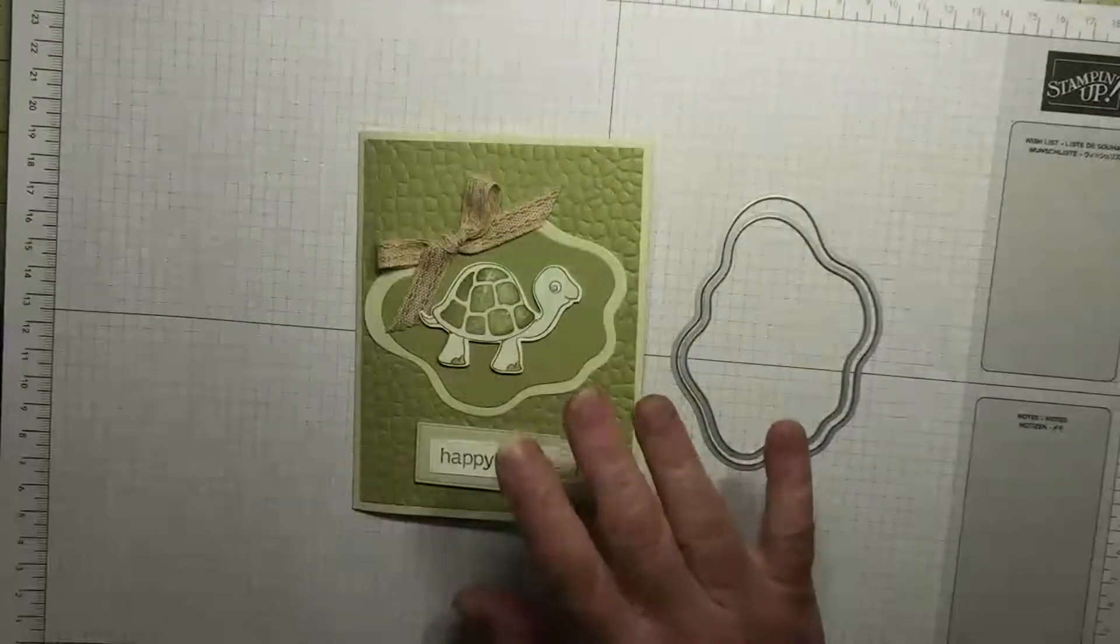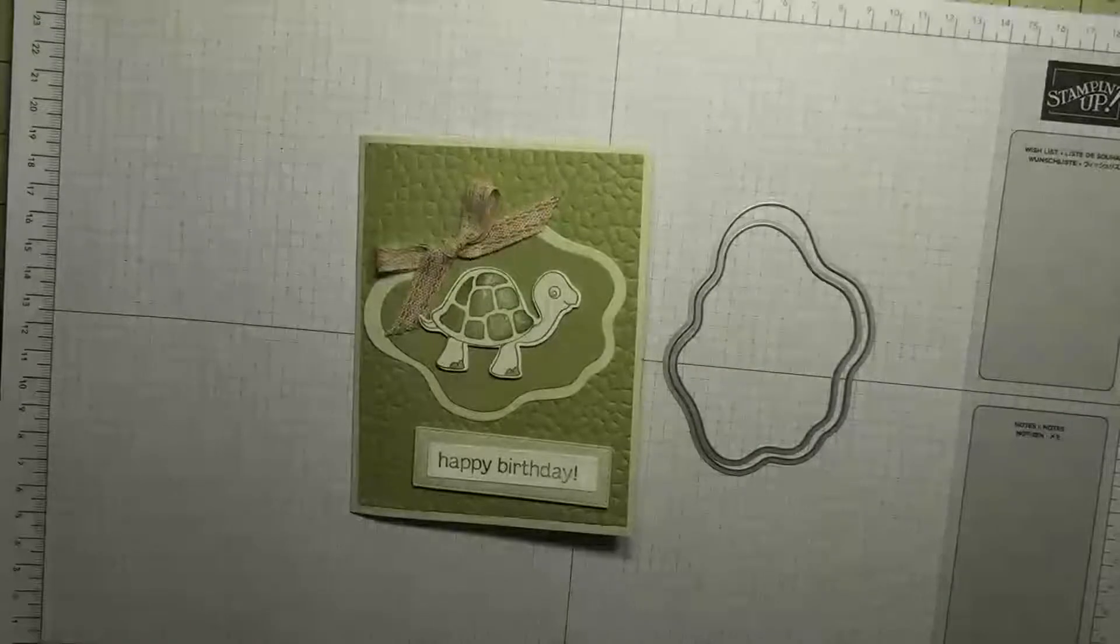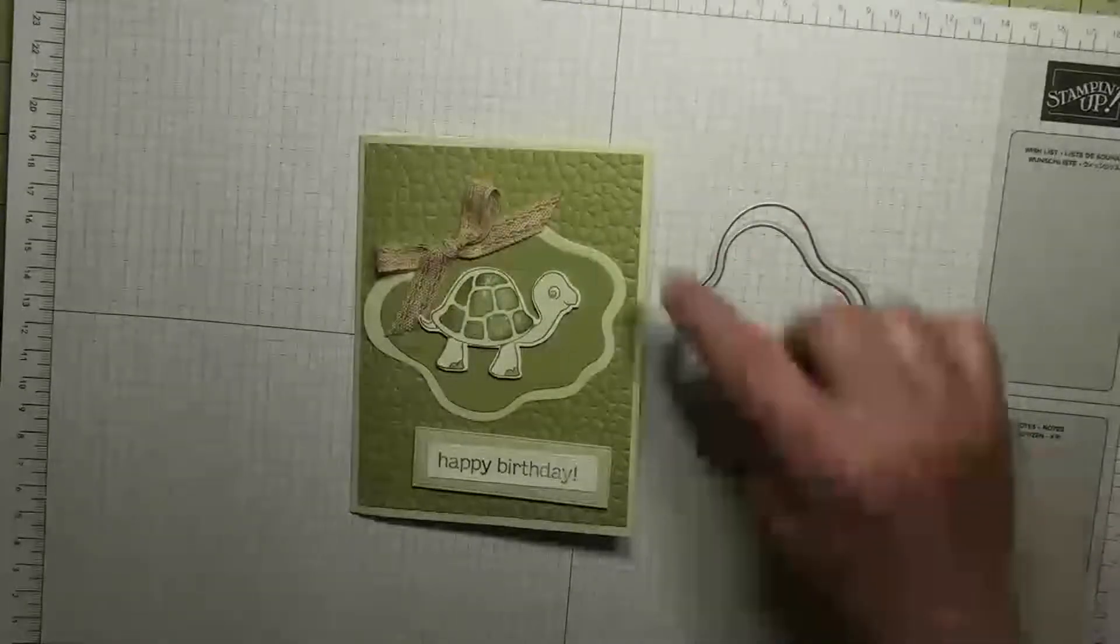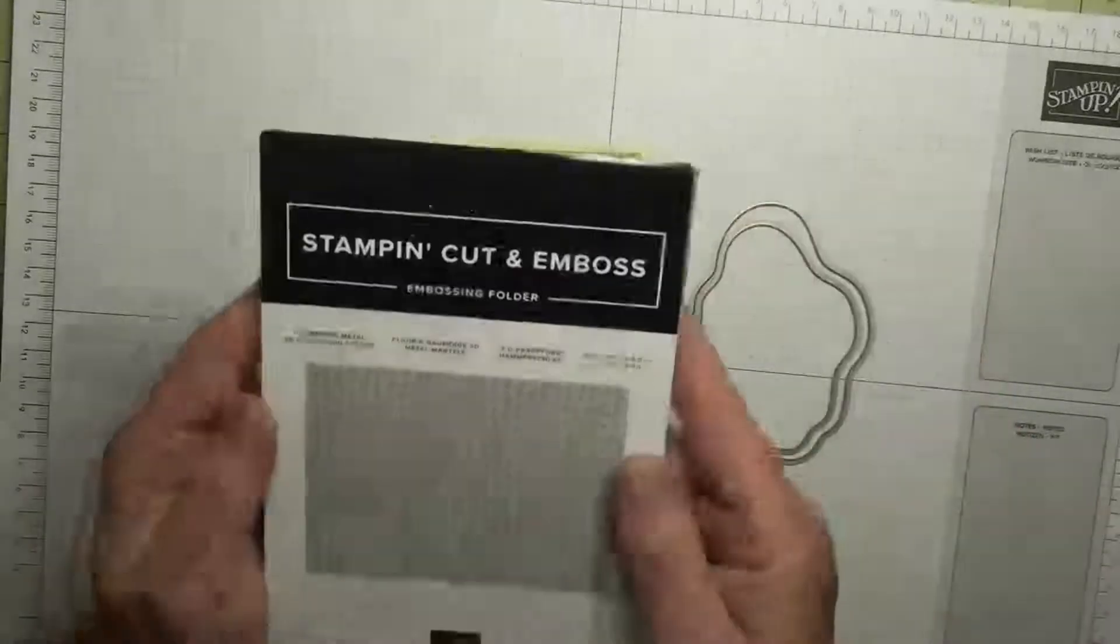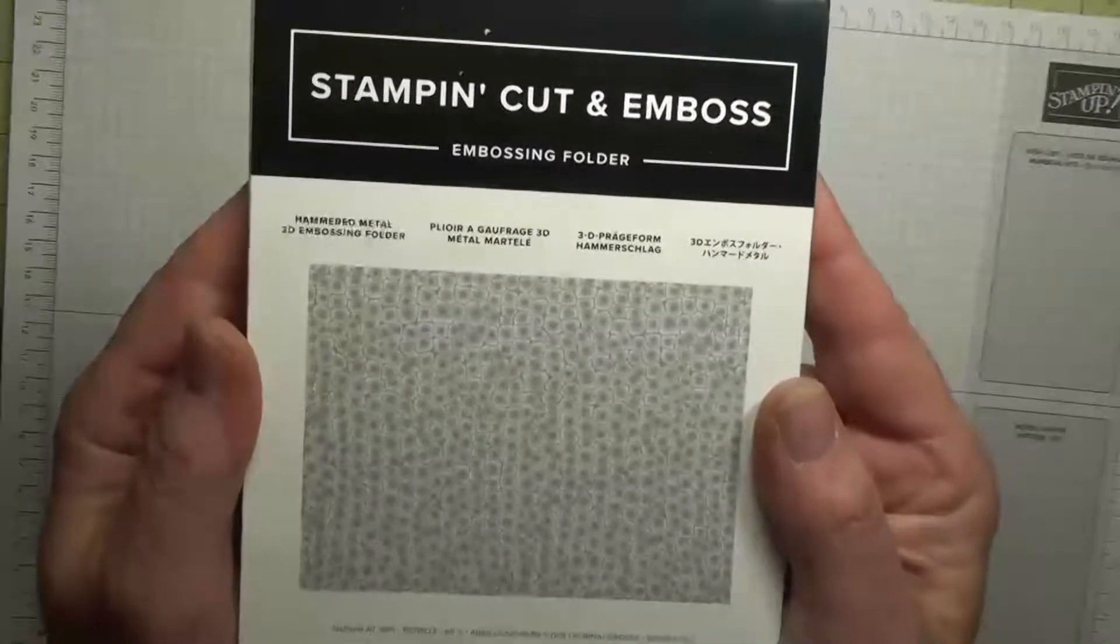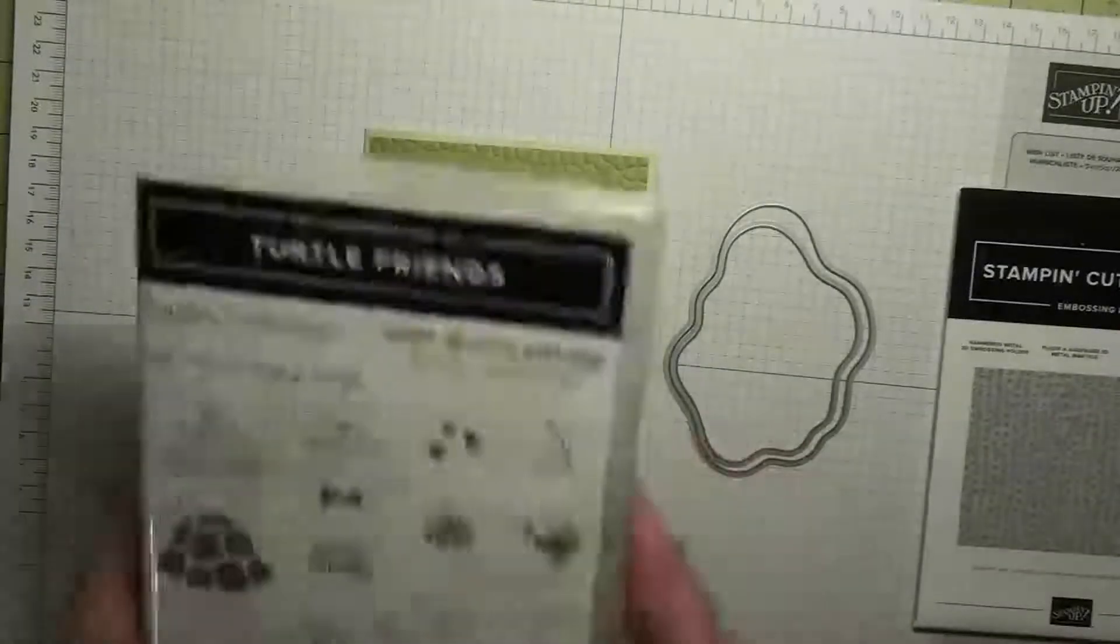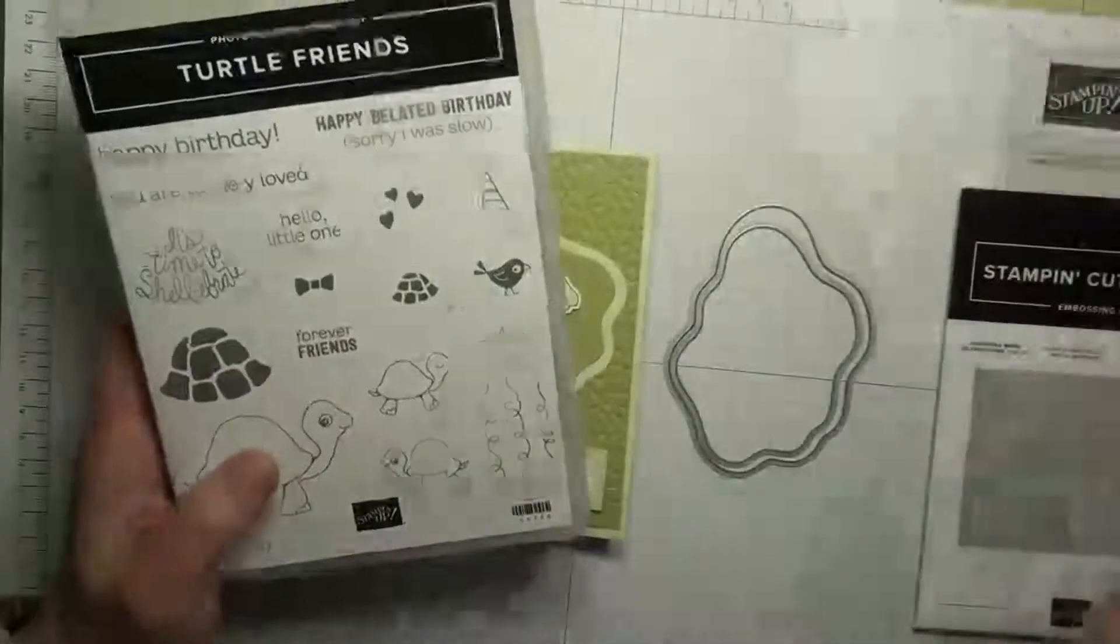So first thing we've got the layering diorama dies. The embossing folder back here is our hammered metal embossing folder. That's a fun embossing folder.